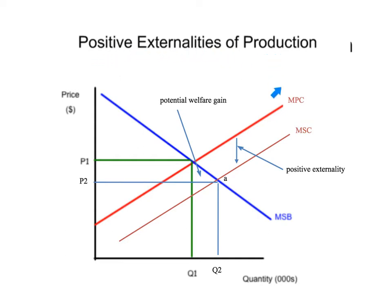Here is the marginal private cost curve, which is the original supply curve. The production of something is going to benefit society, which means the marginal social cost is going to be lower than the marginal private cost. This gap right here is our positive externality. And then we have something called the potential welfare gain — the area of this triangle is the possible gain to society as a result of the continuation of the production of a particular good or service.